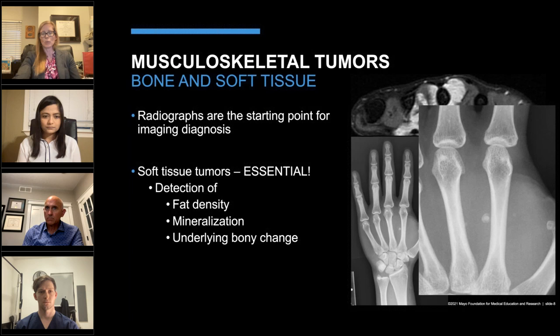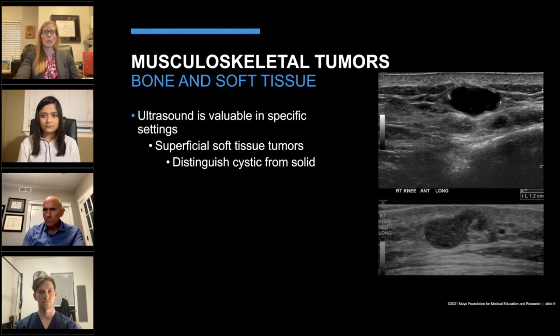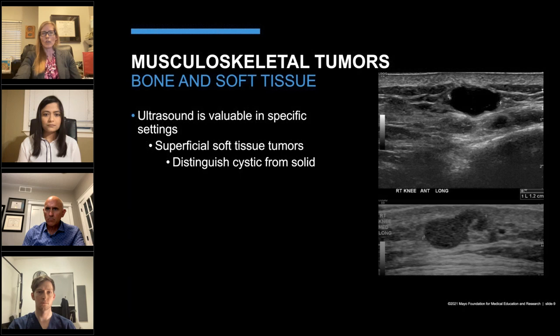Radiographs can also provide information about the overall density of the mass — for example, fatty masses can be very low density compared to surrounding soft tissues — and its relationship or effect on the underlying bone. Even when radiographs are normal, this is still a helpful piece of information for interpreting the subsequent MRI. Ultrasound is another available modality, used most often in superficial soft tissue tumors to determine whether a palpable mass is cystic or solid. An anechoic lesion with no internal Doppler flow can be called benign; a hypoechoic but solid lesion is typically indeterminate and further MRI is recommended.